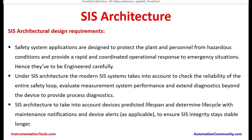Regarding architectural design requirements — safety system applications are designed to protect the plant and personnel from hazardous conditions and provide a rapid and coordinated operational response to emergency situations. Hence, they have to be engineered carefully. The criticality of the plant is very important — the plant needs to be protected, as do the personnel. Hydrocarbon-based plants are prone to fire hazards, and equipment failures may lead to production loss.